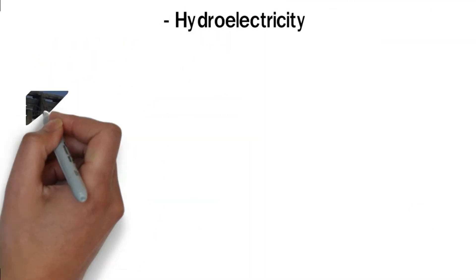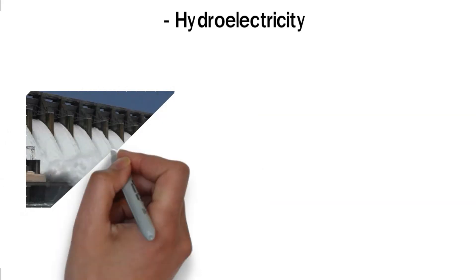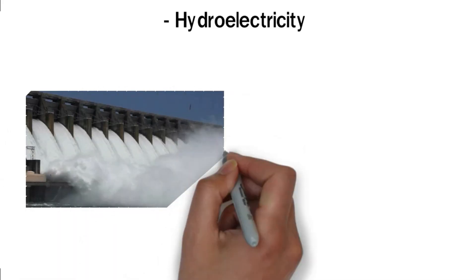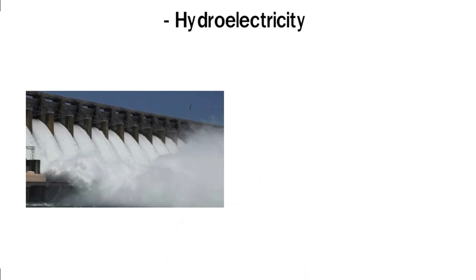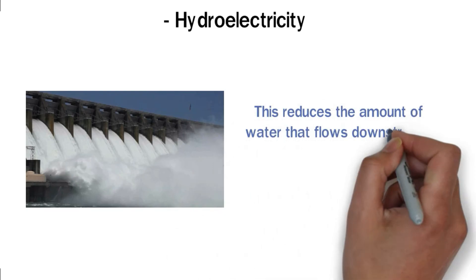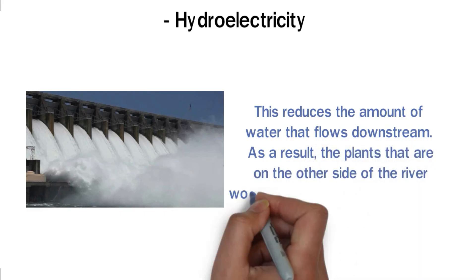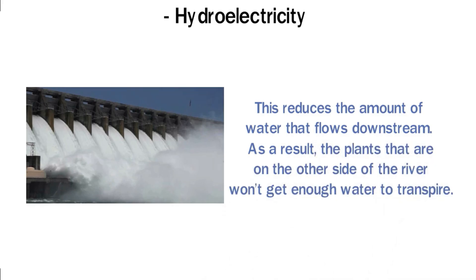Hydroelectricity. The production of electricity in dams requires large volumes of water. When rivers are dammed, it affects the natural flow of the water. This reduces the amount of water that flows downstream. As a result, the plants that are on the other side of the river won't get enough water to transpire.